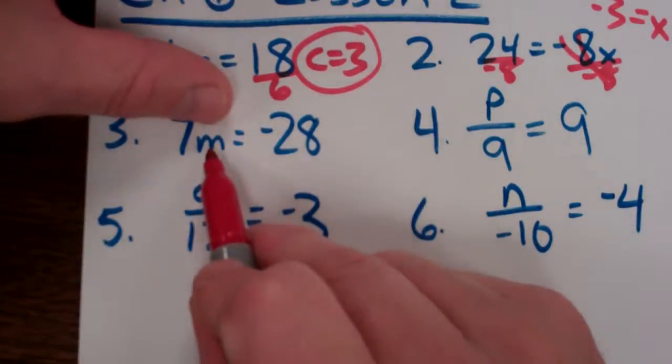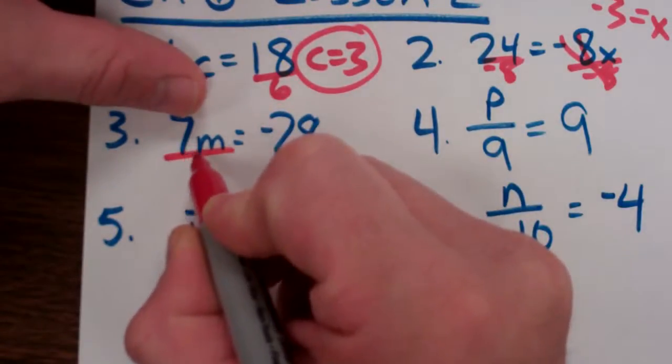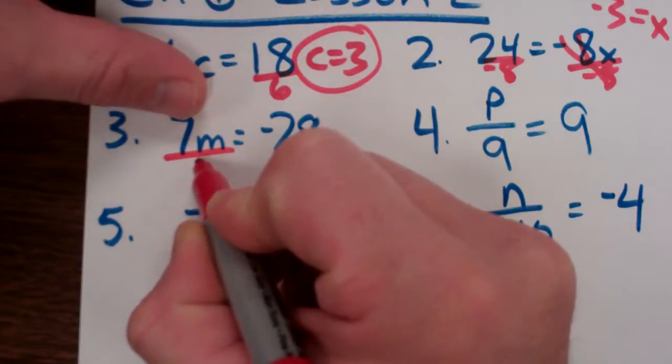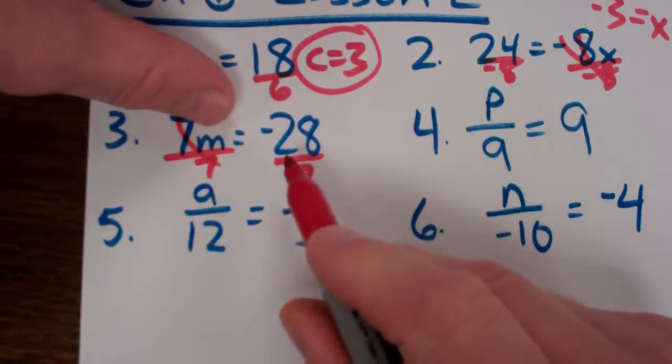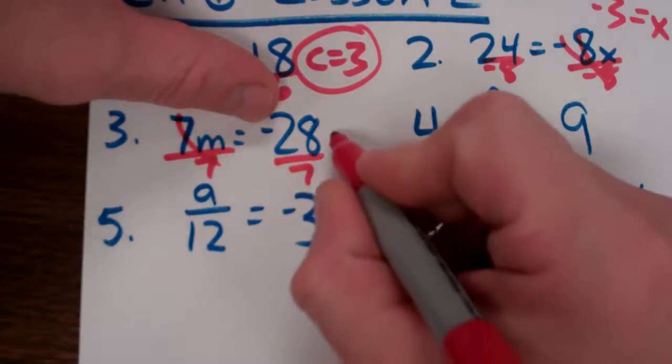So I'll continue. Identify the variable. What they did, somebody multiplied by 7. So I'm going to divide by 7. Do the exact same thing to both sides. That cancels out. I'm left with m equals negative 4.